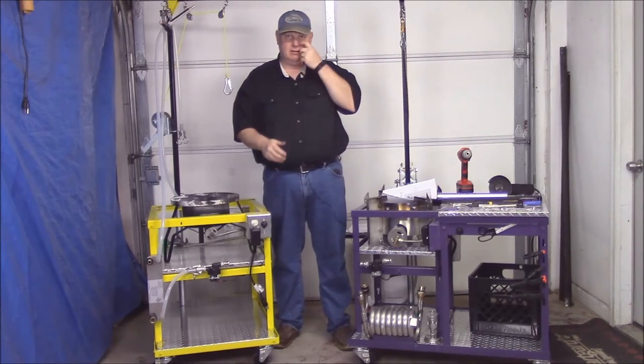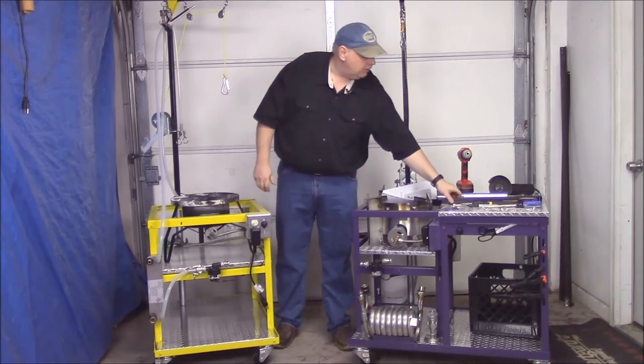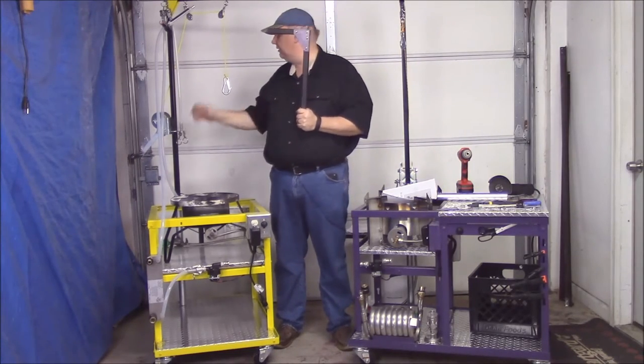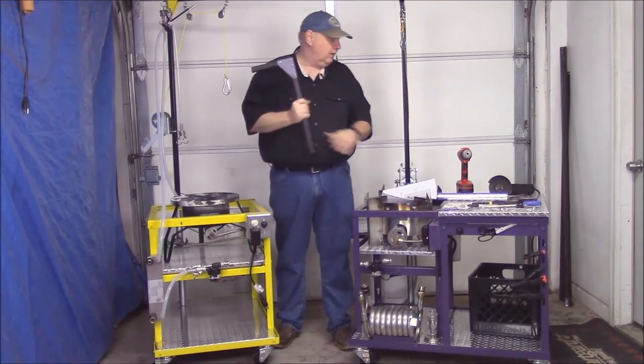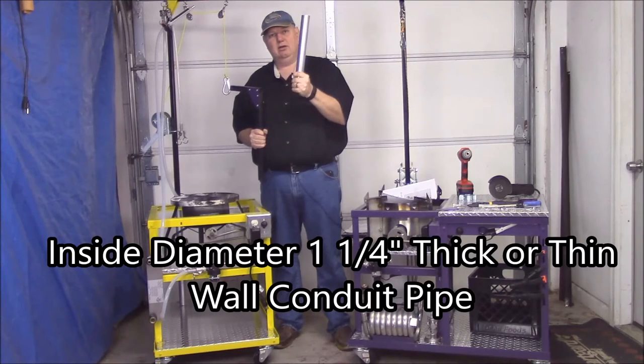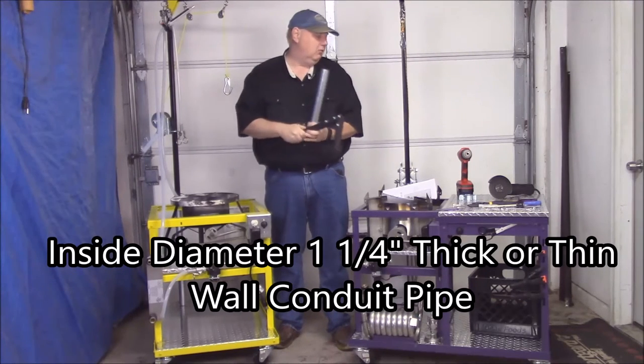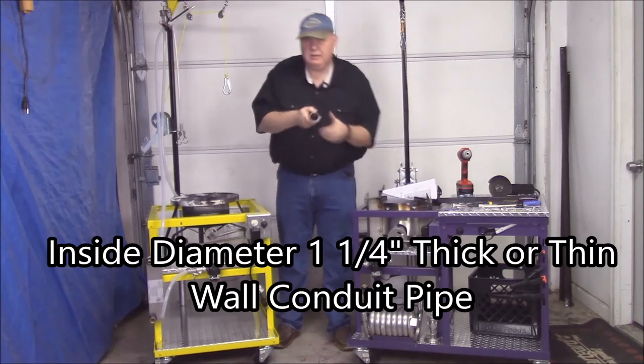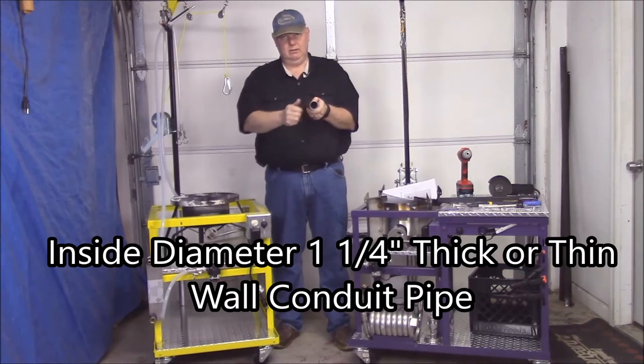So that's it. So we got our crossmember made or our lift made. Now we need to mount our lift onto our stand. And how we're going to do that is we're going to start with our quarter inch, one and a quarter inch conduit. And our one and a quarter inch conduit is diameter on the inside one and a quarter.